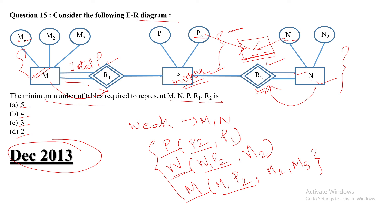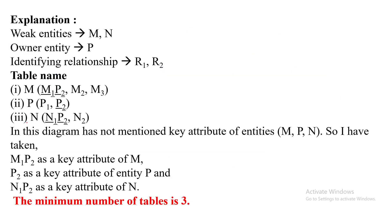The maximum number of tables required would be five, because R1 and R2 would be separate tables. However, in exams the question always asks for the minimum number of tables, because in a database we want to save data using less memory. So the minimum number of tables is three, which corresponds to option C. Therefore, option C is the correct answer.